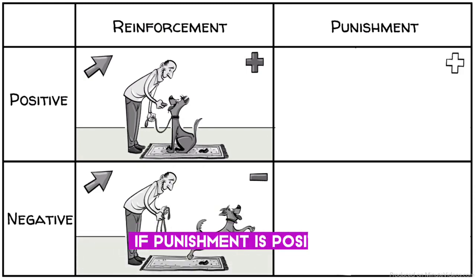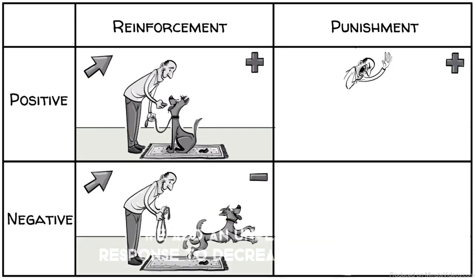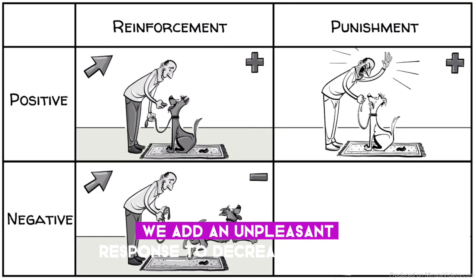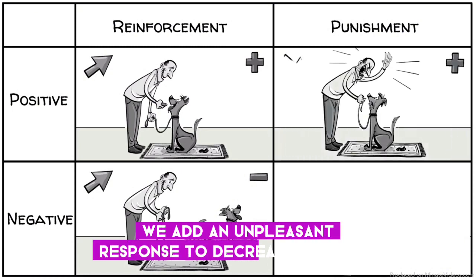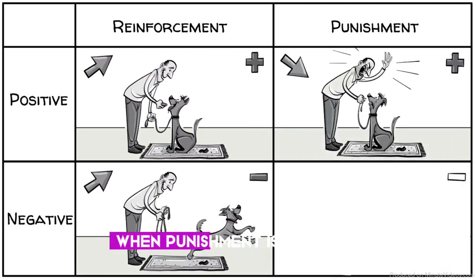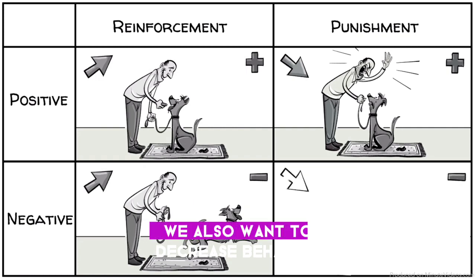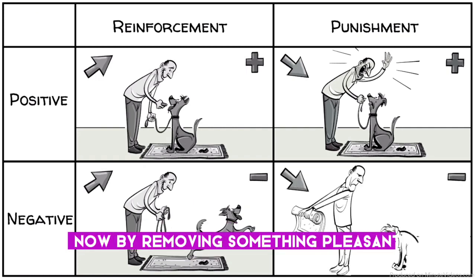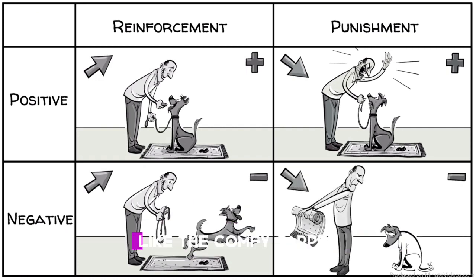If punishment is positive, we add an unpleasant response to decrease behavior. When punishment is negative, we also want to decrease behavior, now by removing something pleasant, like the comfy carpet.